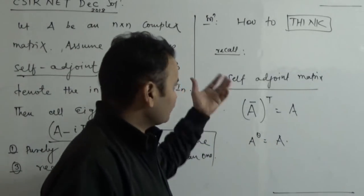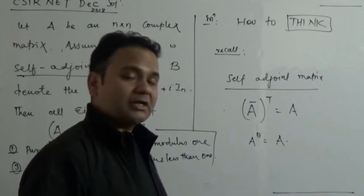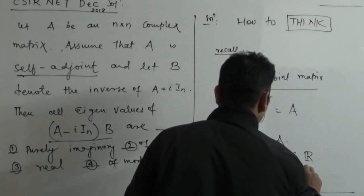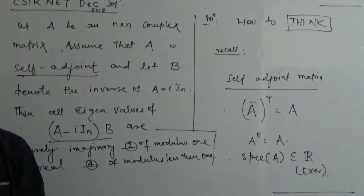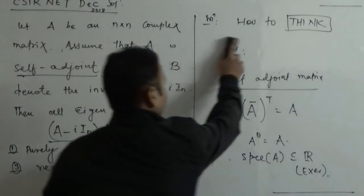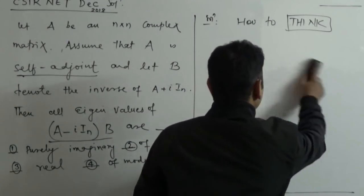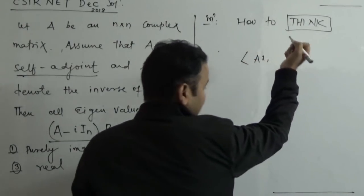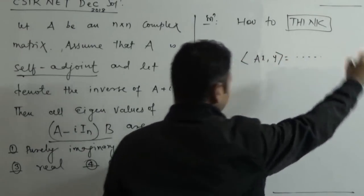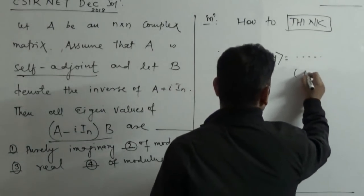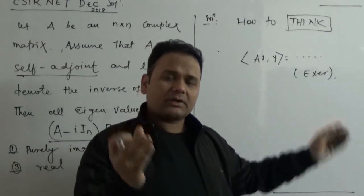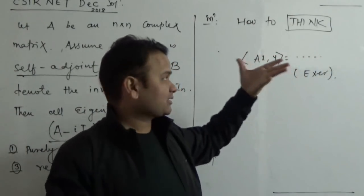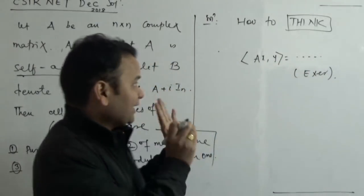In operator sense they say self adjoint operator, but when we talk about complex matrices, then it is like Hermitian or self adjoint. It is a similar name. This is how you should prove this - that's your job. If you know this inner product space, then in inner product space, A is a self adjoint matrix if and only if this relation holds. I would like to use this as an exercise.